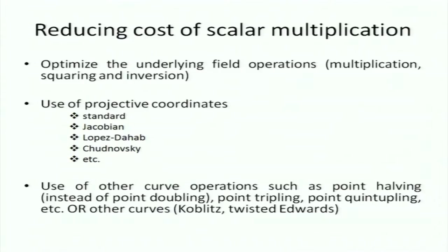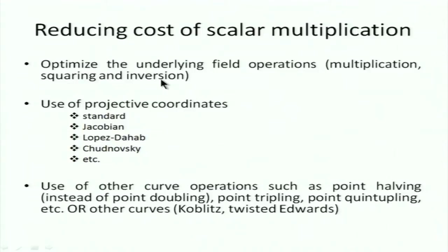NAF is about 20 years old. Another approach uses projective coordinates — standard projective, Jacobian, and others — to eliminate costly field inversions. You can also optimize field multiplication, squaring, and inversion. Inversion is particularly expensive, so researchers used projective coordinates to eliminate most inversions. Special curves like Koblitz curves and twisted Edwards curves also help. Point halving is another creative idea, requiring solving quadratic equations over the field.